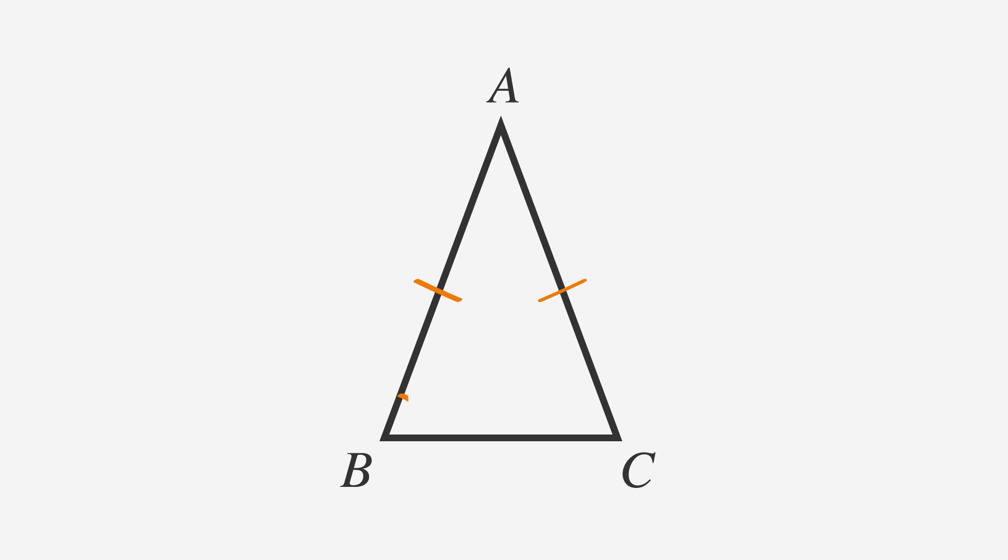If we know that angles B and C are equal, then we know that sides AB and AC will be equal because they're opposite of angles B and C.